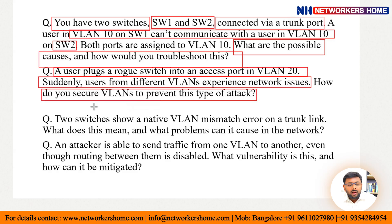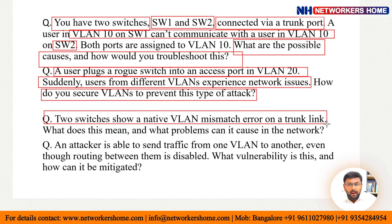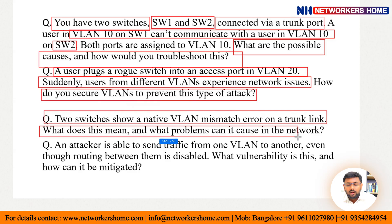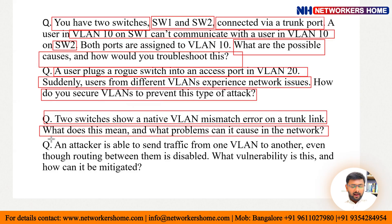Two switches show a native VLAN mismatch error on a trunk line. What does this mean and what problem can it cause in the network? Whenever we have two switches showing a native VLAN mismatch error on a trunk line, what could be the possible reason for showing this information?